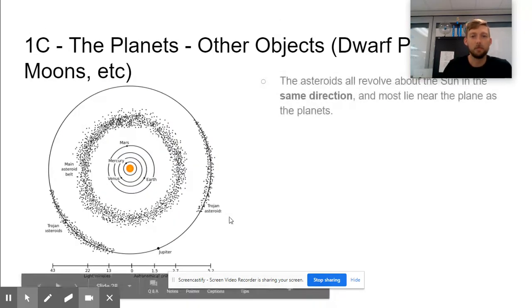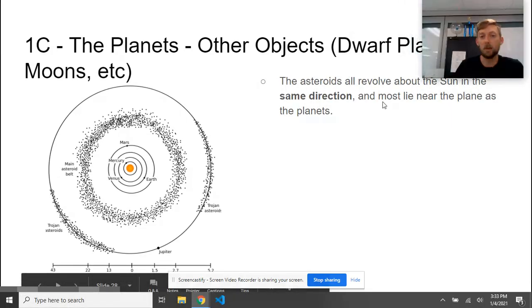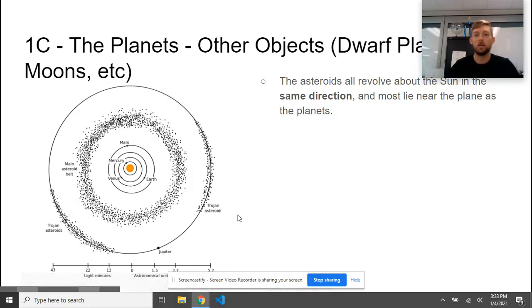The asteroids all revolve around the sun in the same direction and lie near the plane as the planets. Our solar system has the sun in the middle and the planets all revolve around on more or less a flat plane. The asteroid belt is between Mars and Jupiter and is still on this same plane—not perpendicular to where the other planets are going.